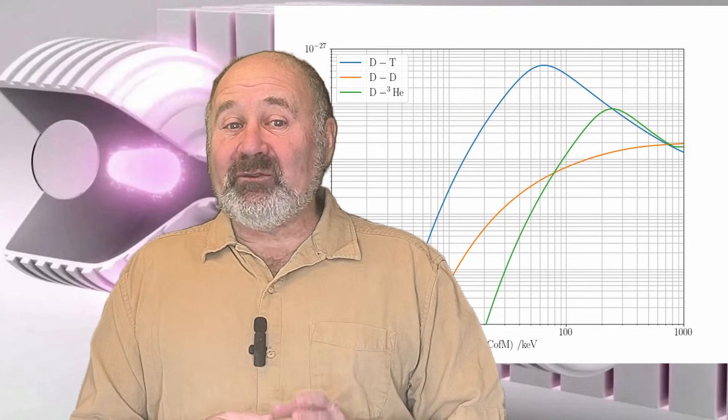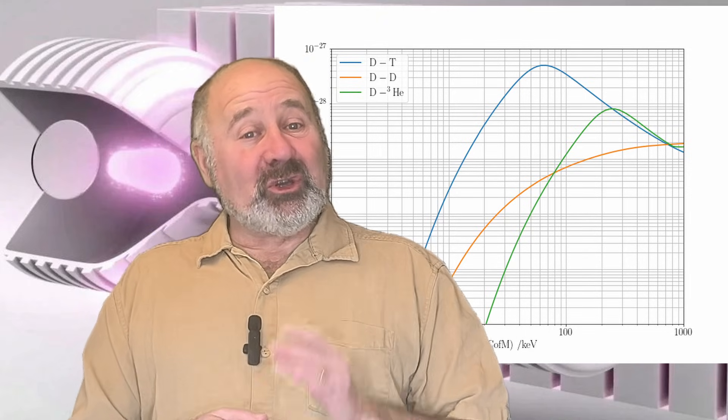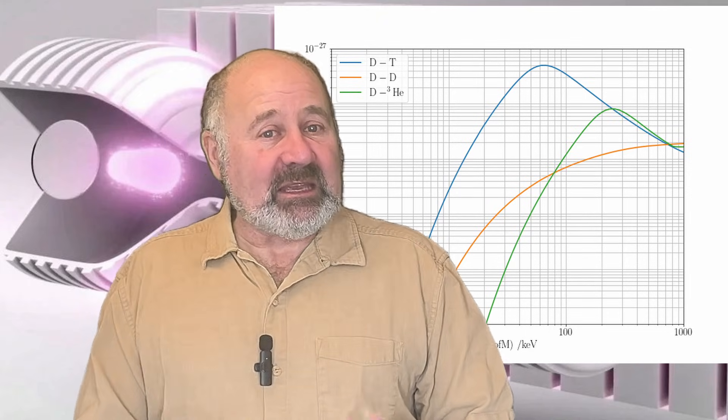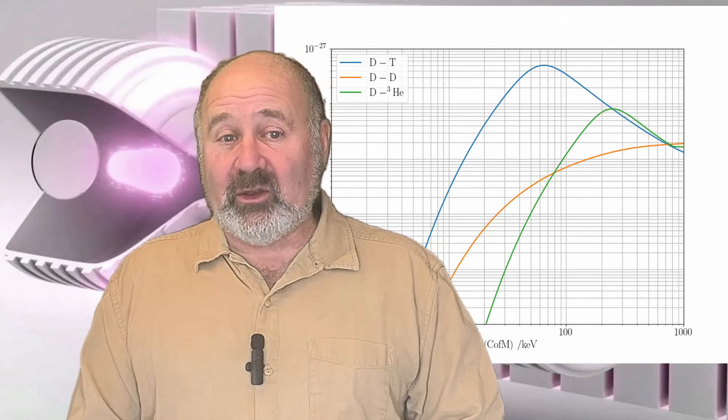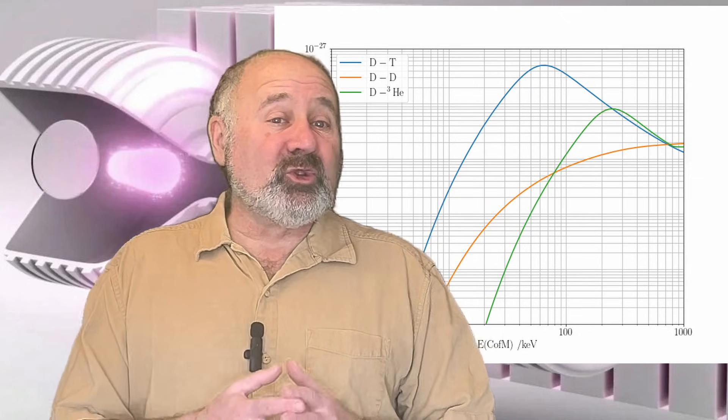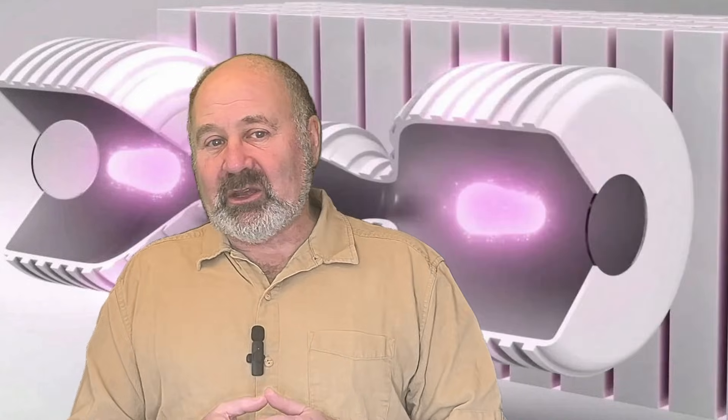What this also means is that if you have a plasma of deuterium and helium-3 as Helion plans to, that you'll get a lot of DD reactions that produce very little energy. But they will produce neutrons that need to be managed. They'll also produce helium-3 and tritium.